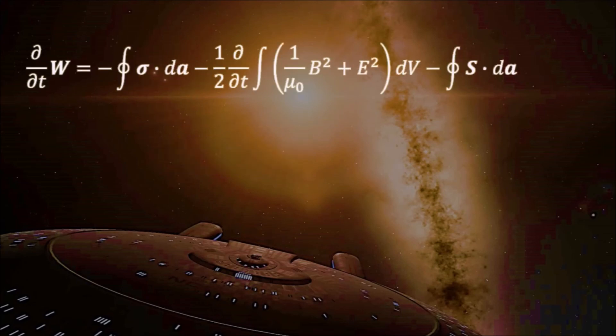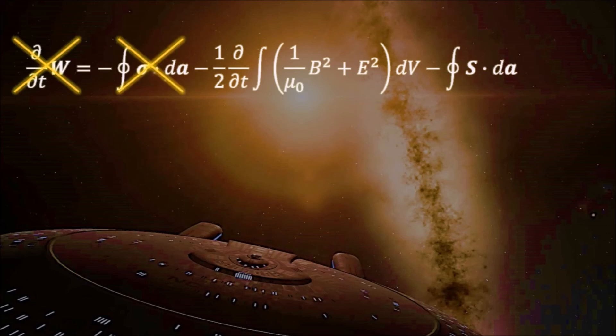Going back to this expression, we again consider a region of space with no charges in it, which leads to the conservation equation for the fields. So, it turns out that the Poynting vector is also the energy current for the electromagnetic fields.